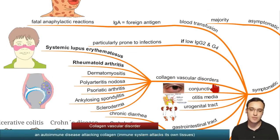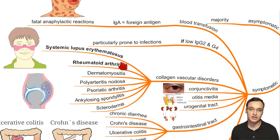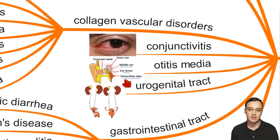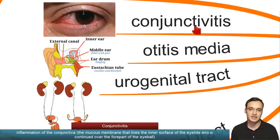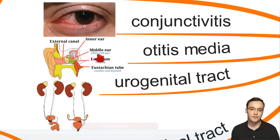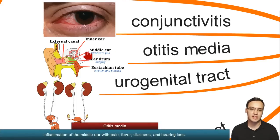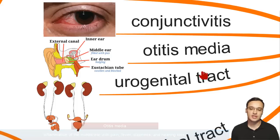We can also see collagen vascular disorders — autoimmune conditions — where systemic lupus erythematosus and rheumatoid arthritis are the most important ones associated with IgA deficiency. Other symptoms include conjunctivitis and otitis media, where you can see pus filled in the middle ear cavity.